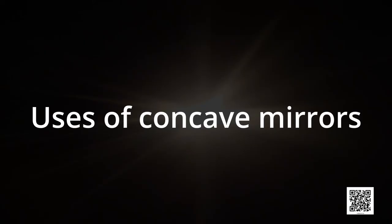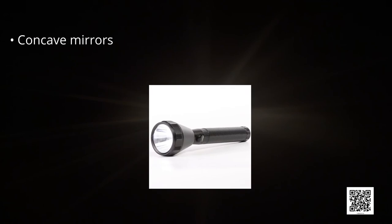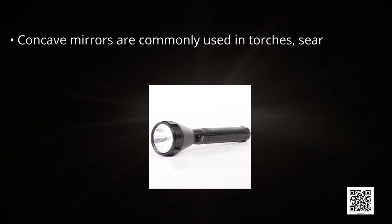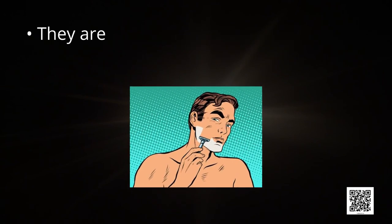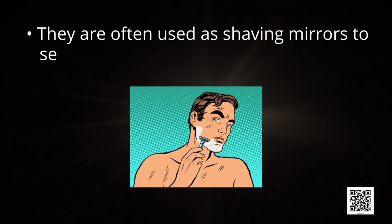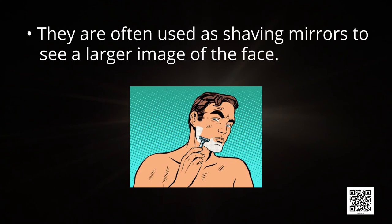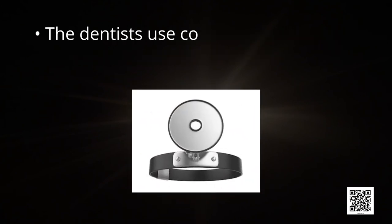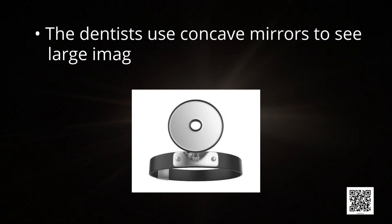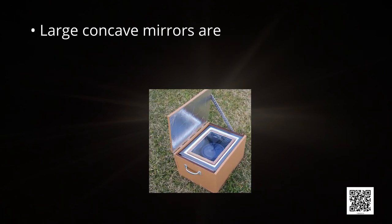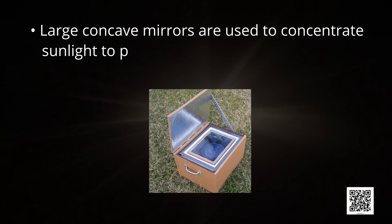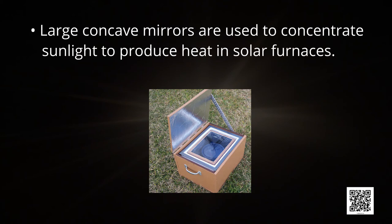Concave mirrors are commonly used in torches, searchlights, and vehicle headlights to get a powerful parallel beam of light. They are often used as shaving mirrors to see a larger image of the face. Dentists use concave mirrors to see large images of a patient's teeth. Large concave mirrors are used to concentrate sunlight to produce heat in solar furnaces.